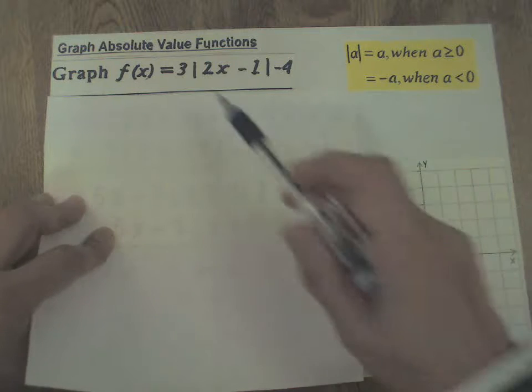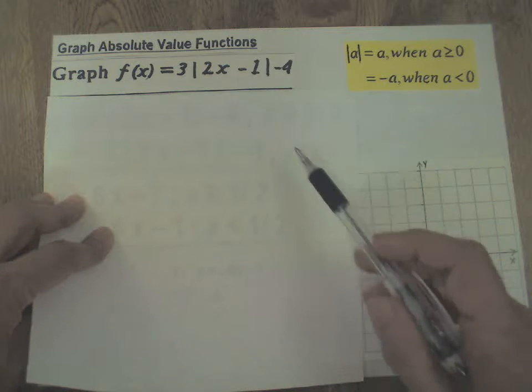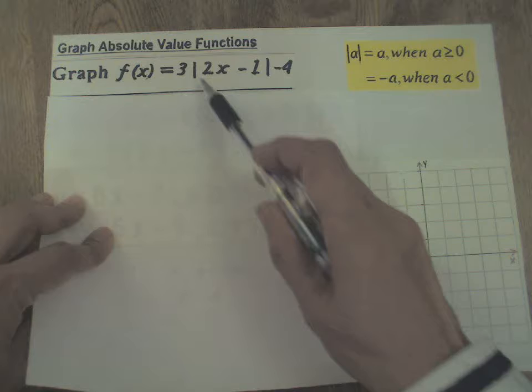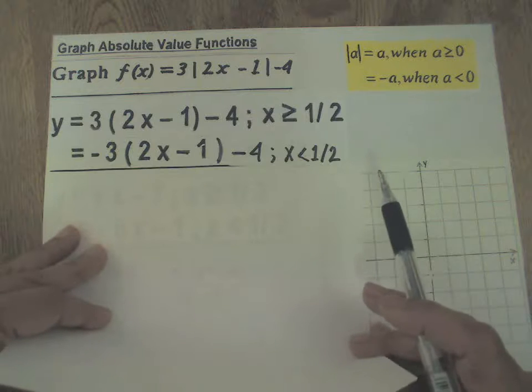So that's what I have here. Keep everything else as it is. Keep the 3, keep the minus 4. Simply replace this by its simplification, and this is what you get.